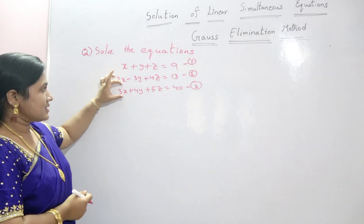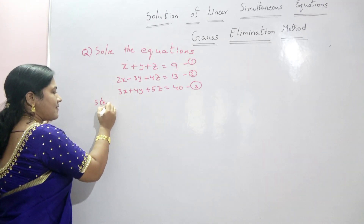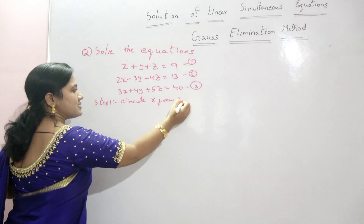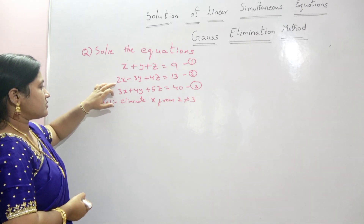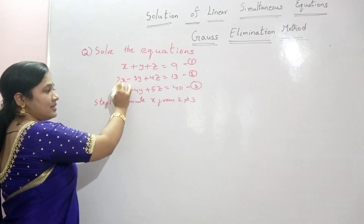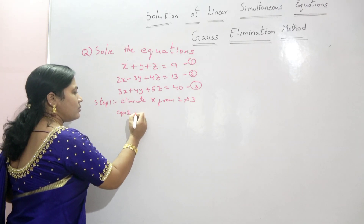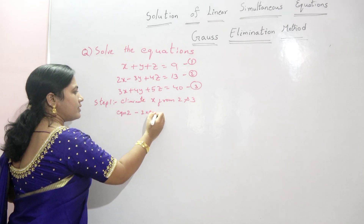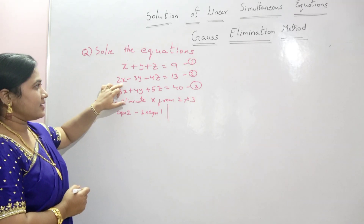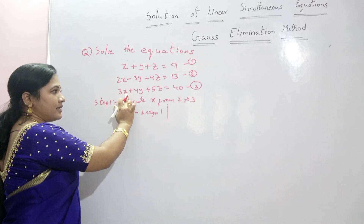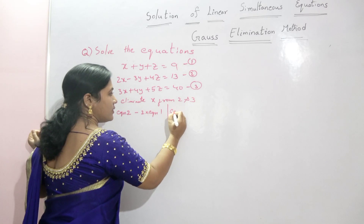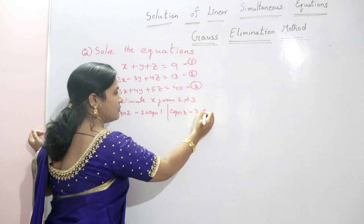Step 1: eliminate x from the second and third equations. The operations used are: for equation 2, multiply equation 1 by 2 and subtract from equation 2 — that is, equation 2 minus 2 times equation 1. For equation 3, multiply equation 1 by 3 and subtract from equation 3 — that is, equation 3 minus 3 times equation 1.